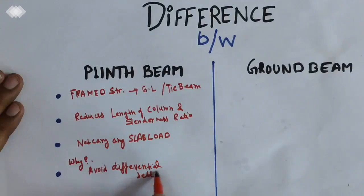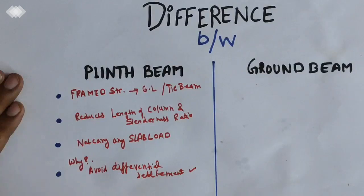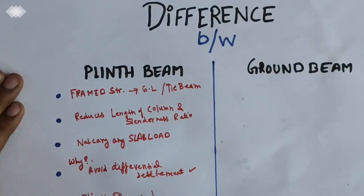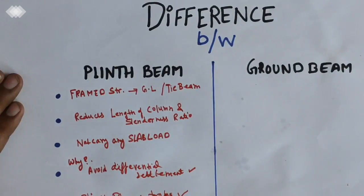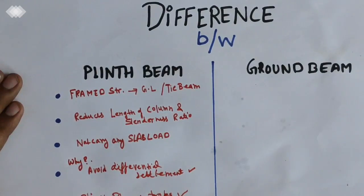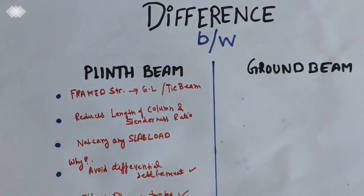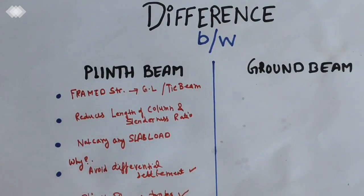The main question is: why are plinth beams provided? First, to avoid differential settlement. Second, to maintain the plinth plane properly. Third, to avoid difficulties in construction of walls, and to connect all the columns when the depth of foundation is high.